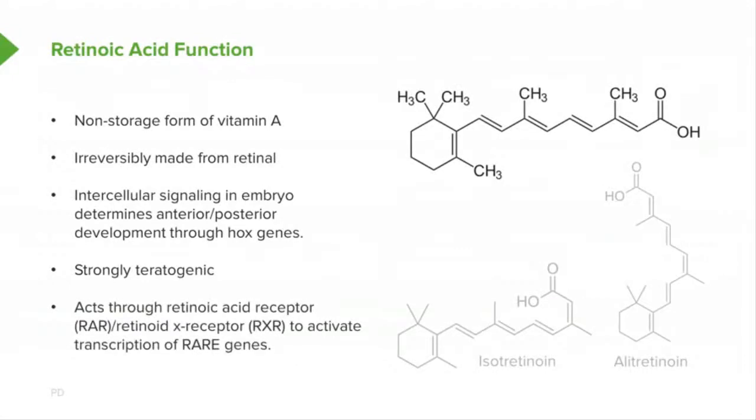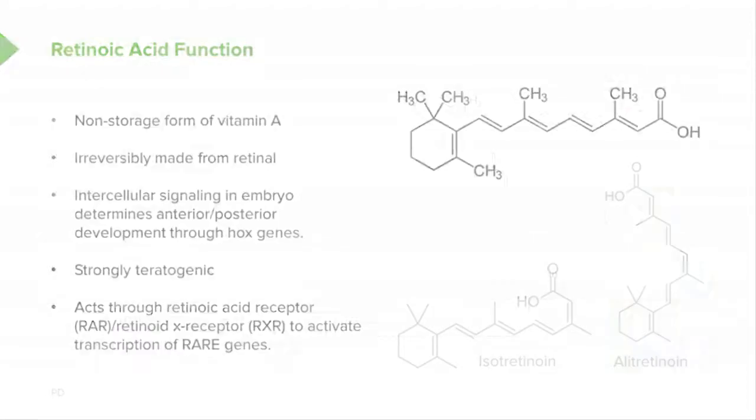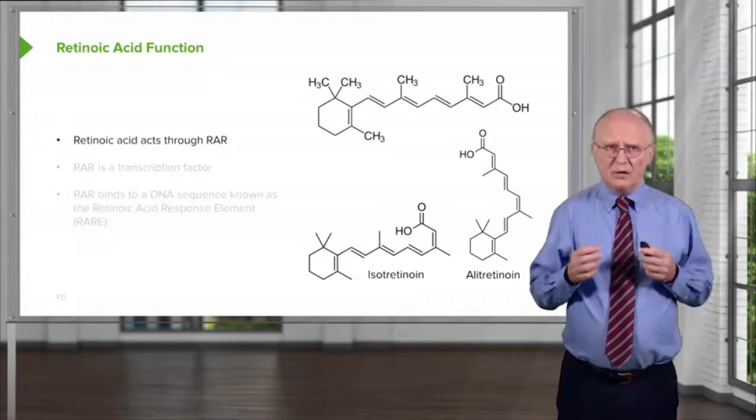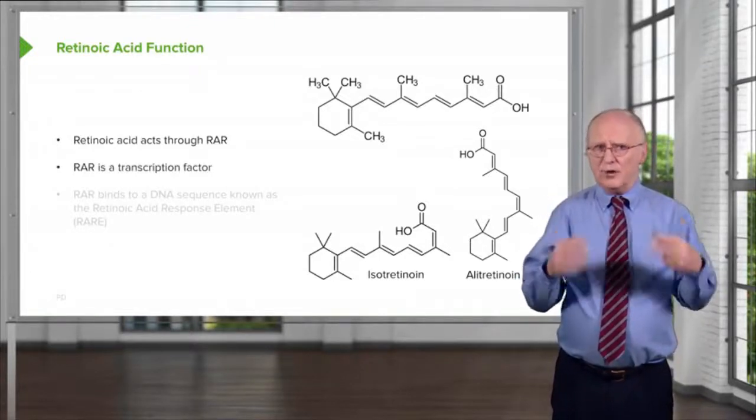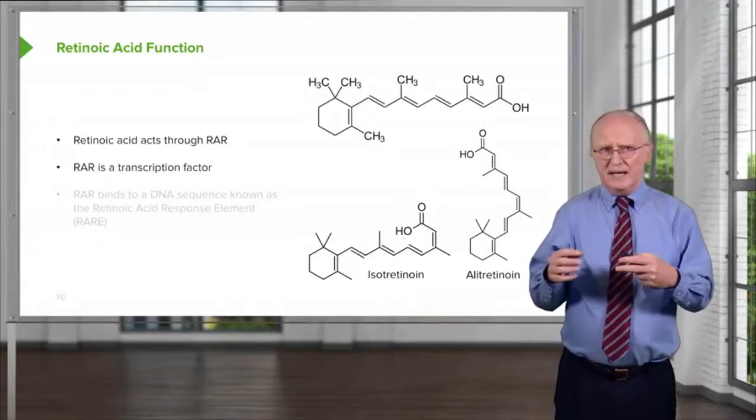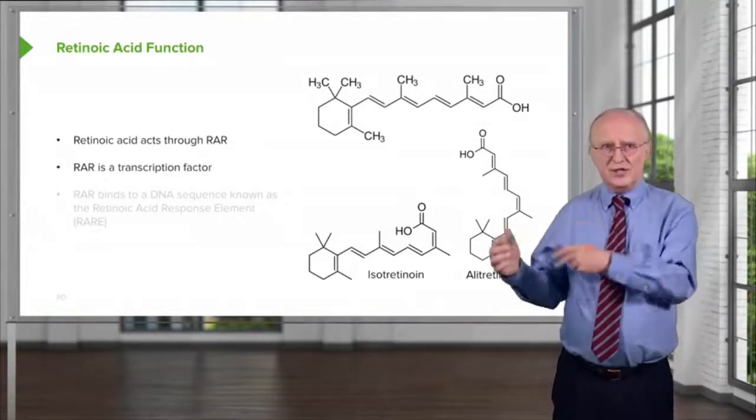So retinoic acid exerts its functions through a retinoic acid receptor known as RAR, or the retinoid X receptor known as RXR. These receptors allow the cell to activate the transcription of genes that are known as RAR genes. Now I'll describe those in just a moment. So as I said, retinoic acid acts through RAR, and RAR is a transcription factor, meaning it's a protein that will bind to DNA and activate certain genes.